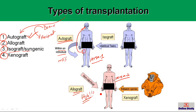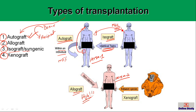An isograft, or syngeneic transplantation, is when a graft, organ, or tissue is removed from a person and transplanted to an identical twin. Because they are identical twins, their major histocompatibility complex (MHC) molecules are almost the same, so the chance of rejection is least for this type of transplantation.